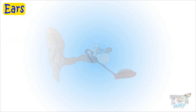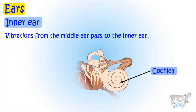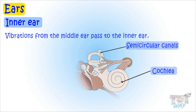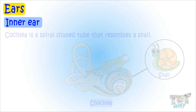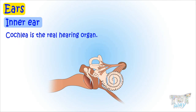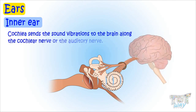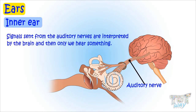Now let's learn about the inner ear. Vibrations from the middle ear pass to the inner ear, which consists of the cochlea and semicircular canals. The cochlea is a spiral-shaped tube that resembles a snail. Vibrations from the eardrum enter the cochlea and vibrate small hairs inside it. This is the real hearing organ, as these small hairs send sound vibrations along the cochlear nerve, or auditory nerve, to the brain, where signals are interpreted — and only then do we actually hear anything.